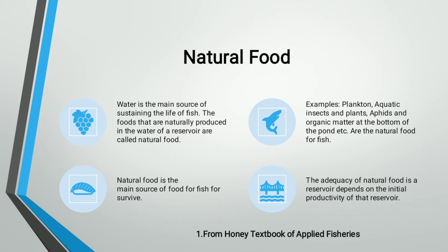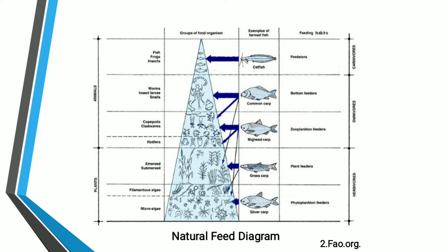The efficacy of natural food in a reservoir depends on the initial productivity of that reservoir; every reservoir has its own resources that produce food for aquatic animals. Regarding a chart of aquatic animals and their feeds: cat predators such as catfish eat fish, frogs, and insects; bottom feeders such as common carp feed on worms, insect larvae, and snails; zooplankton feeders such as bighead carp feed on copepods, cladocerans, and rotifers; plant feeders such as grass carp feed on filamentous algae and microalgae.